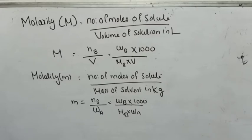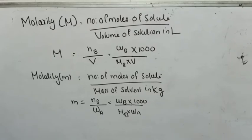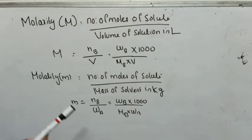Now let us learn molality, which is expressed as small letter m. This is equal to number of moles of solute by mass of solvent in kilograms. Small m (molality) = NB / WA, where NB is written as WB by MB. If the mass of solvent is given in grams, you have to convert it into kilograms, so WA is divided by 1000 — that 1000 goes up — giving the expression: m = WB × 1000 / (MB × WA).